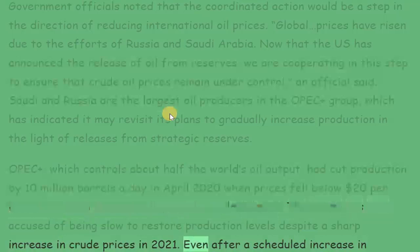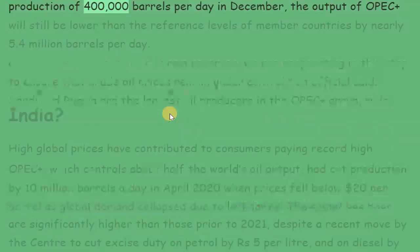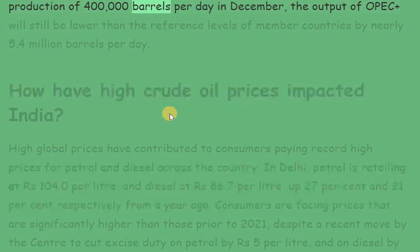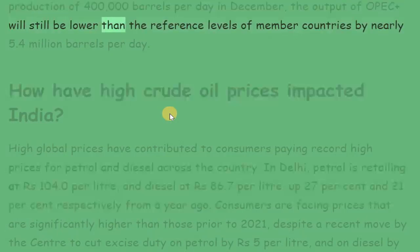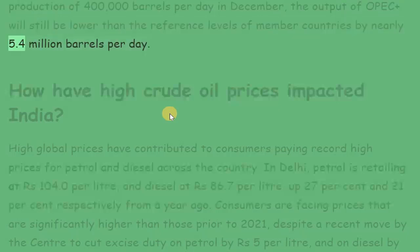Even after a scheduled increase in production of 400,000 barrels per day in December, the output of OPEC Plus will still be lower than the reference levels of member countries by nearly 5.4 million barrels per day.